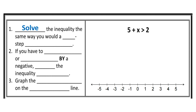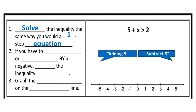In order to graph an inequality, especially if the inequality is not solved already, we need to follow a couple basic steps. First, solve the inequality the same way you would solve a one-step equation. What's happening to my variable? How do I undo it? 5 plus x means I'm adding 5, so I'm undoing addition using subtraction. I'm going to subtract 5 from both sides. 5 minus 5 gives me 0, so I'm left with x on the left. 2 minus 5 gives me negative 3. This is my solved inequality — x has to be by itself before you can plot an inequality on the graph, so you have to solve for x.